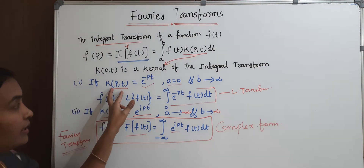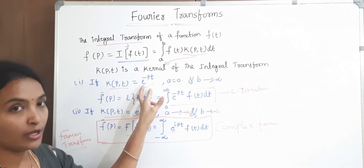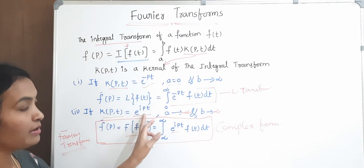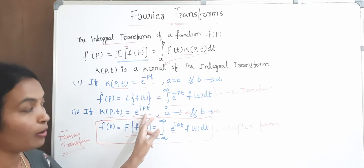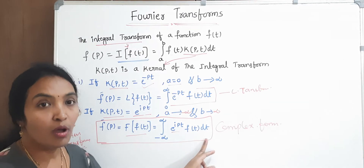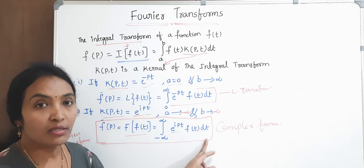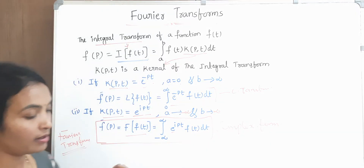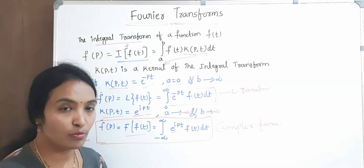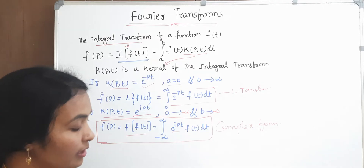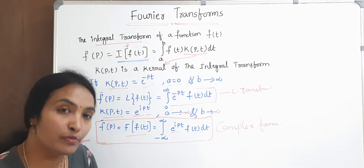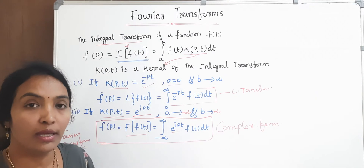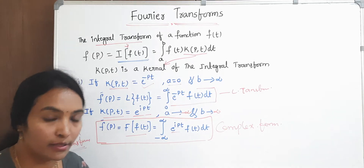If the kernel has a normal exponential, it will change to Laplace. If the kernel value is exponential in terms of complex, it will change to the complex Fourier transform.